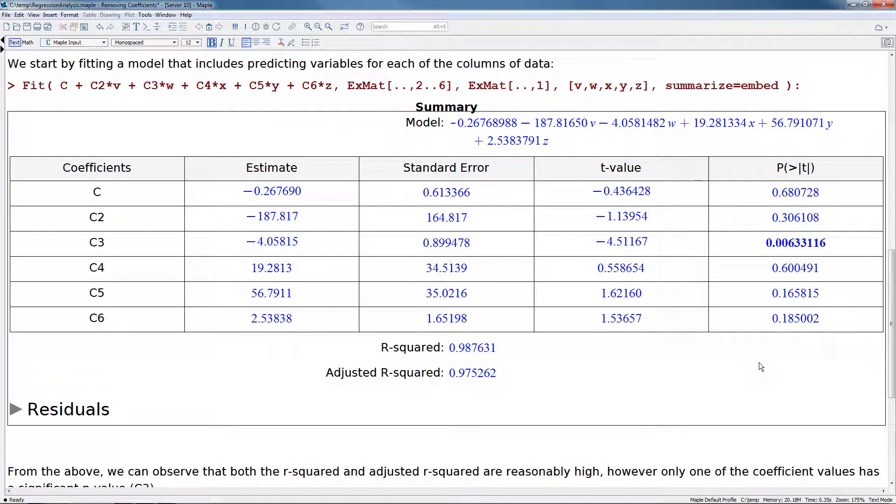So this is the result of running this model. As we can see here, here are coefficients, their estimates, their standard errors, T values, and P values. Now what's interesting about using the embedded summary for fit is that if any of the P values are significant, those are actually marked with bold. So here we can see that the C3 coefficient actually has a P value which is less than .05, so it's marked in bold.